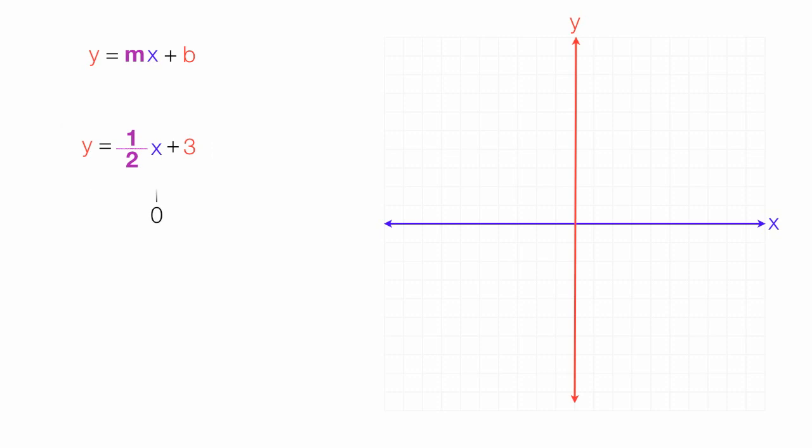When x is 0, we can calculate the y-intercept. Here, x is 4, there it's 2, and here it's 0. In fact, anywhere along the y-axis on the red line, x is equal to 0.